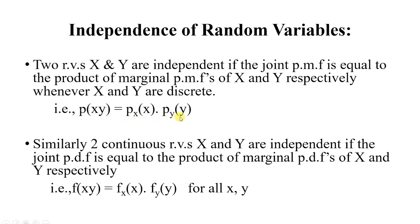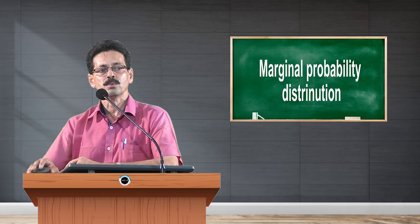Similarly, whenever the random variables are continuous, the joint pdf is equal to the product of their marginal pdfs of x and y respectively. That means the joint pdf f(x,y) equals f(x) times f(y) for all values of x and y.